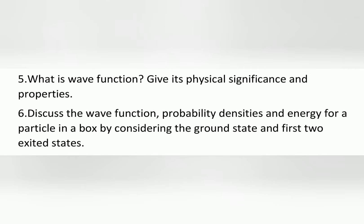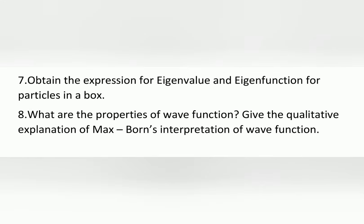The sixth question is: discuss the wave function, probability densities and energy for a particle in a box by considering the ground state and first two excited states. The seventh question is: obtain the expression for eigenvalue and eigenfunction for particles in a box. The last question is: what are the properties of wave function, give the qualitative explanation of Max Born's interpretation of wave function. These are the important questions in module one.